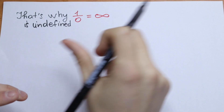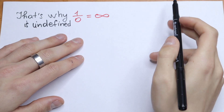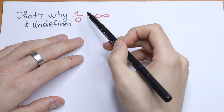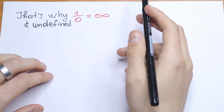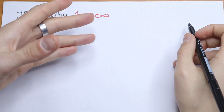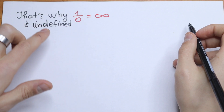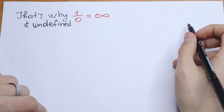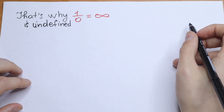Hello everyone, welcome back to High Mathematics! In this video I try to explain to you why 1 over 0 is undefined. So how can we prove that fact? How can we show step by step that this fact is correct?